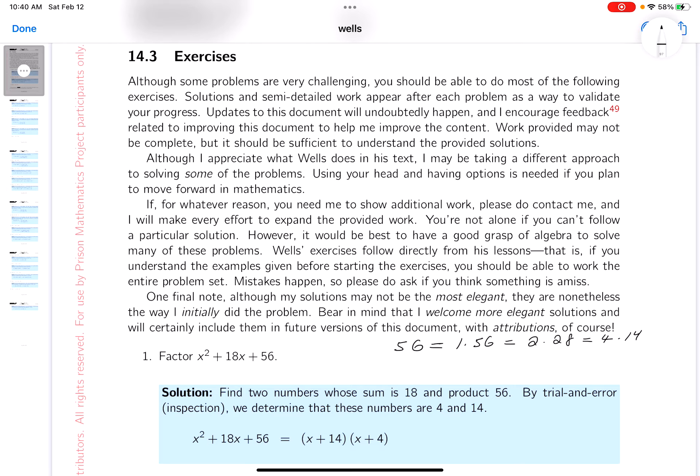So what they do is they actually rewrite the problem so it's a factoring by grouping. Let me write this down for you: x squared plus 4x plus 14x, and 4x plus 14x is certainly 18x, plus 56.